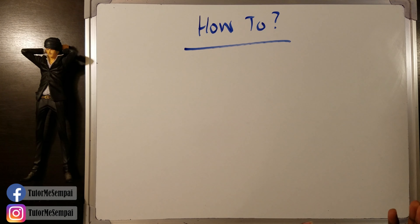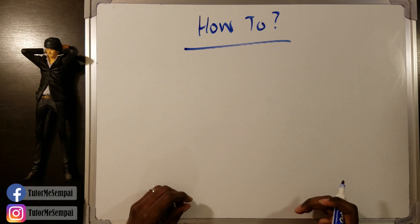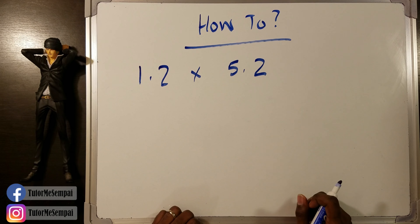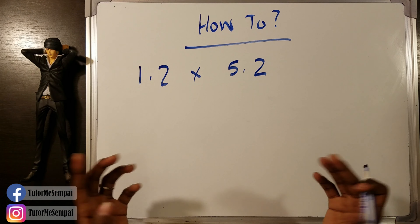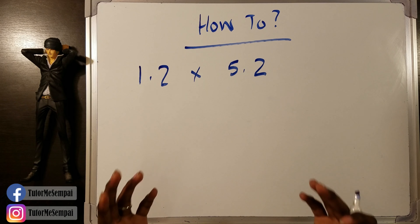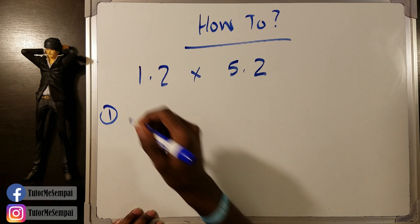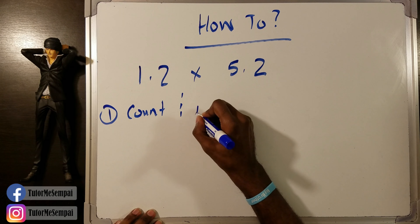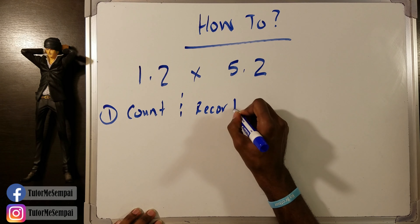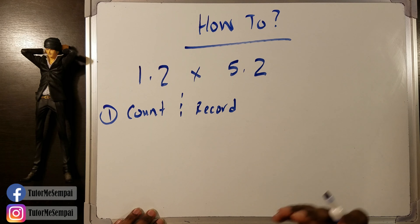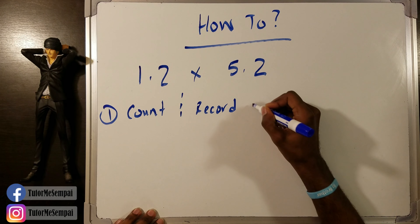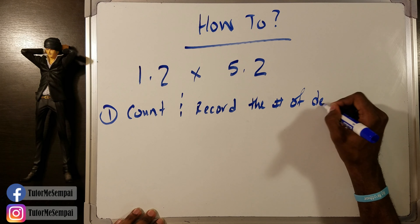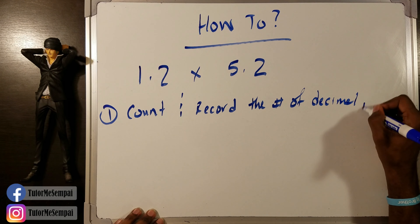Let's say we have this example here: 1.2 times 5.2. Our first step is to count and record how many total decimal spots we have. Count and record — the record part is very important because you don't want to forget anything. So count and record the number of decimal places.